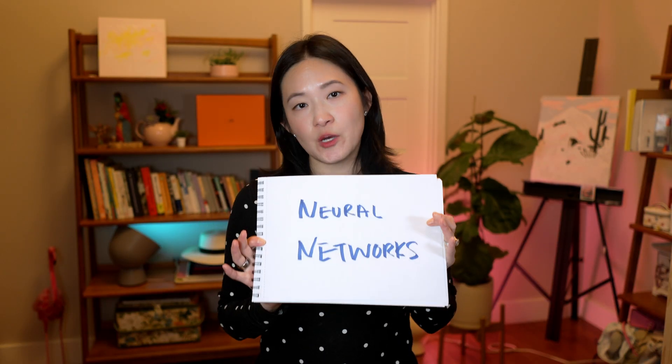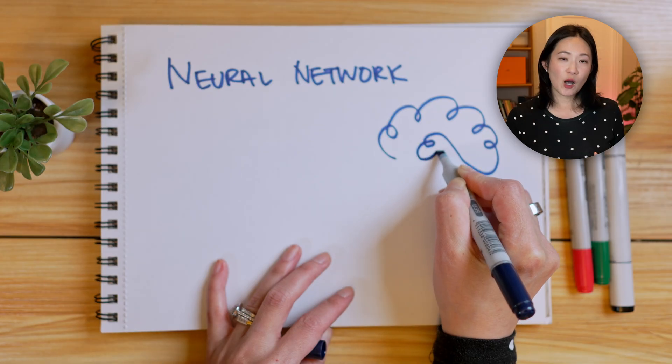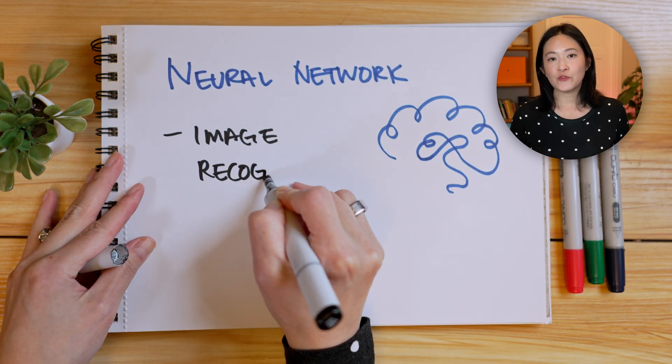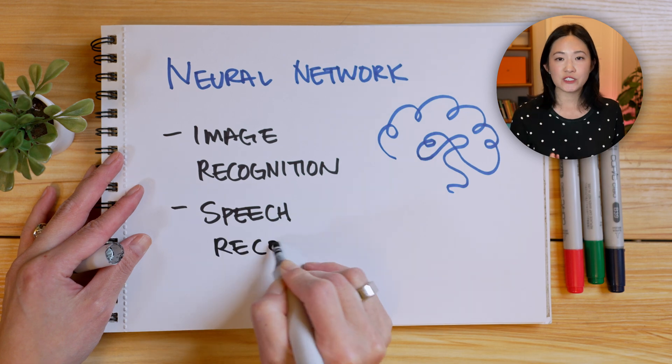While linear models work well for simple problems, they're not great when tackling more complex patterns. This is where neural networks come in. A neural network is a more advanced model inspired by the way our brain works. Just like how our brain has neurons that work together to process information, neural networks can learn complex non-linear patterns in data, making them useful for tasks like image recognition or speech understanding.